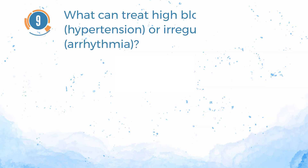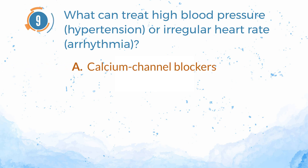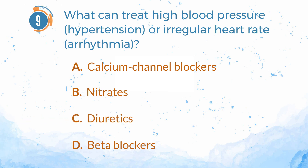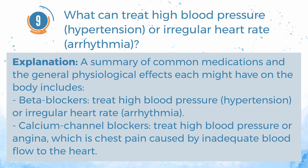Number 9. What can treat high blood pressure (hypertension) or irregular heart rate (arrhythmia)? A. Calcium channel blockers. B. Nitrates. C. Diuretics. D. Beta blockers. The answer is D. Beta blockers. Explanation: a summary of common medications — beta blockers treat high blood pressure (hypertension) or irregular heart rate (arrhythmia); calcium channel blockers treat high blood pressure or angina, which is chest pain caused by inadequate blood flow to the heart.